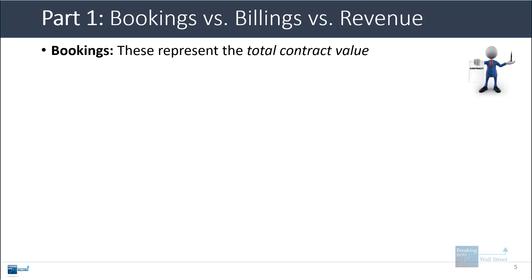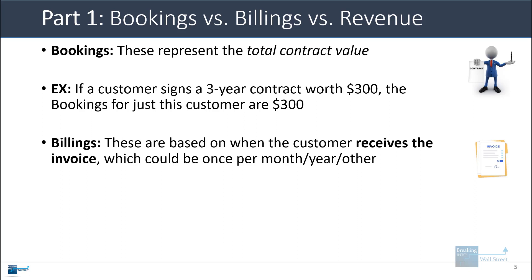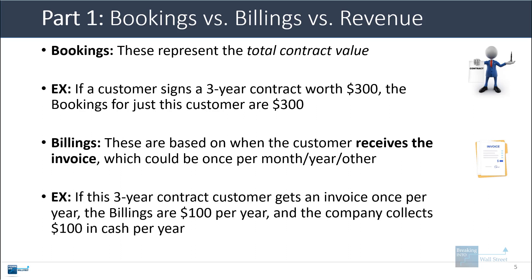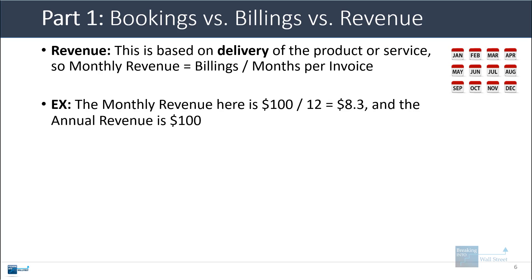Bookings for a software as a service company represent the total contract value. So if a customer signs a three-year contract worth $300, the bookings for just this customer are $300. Billings are based on invoices and linked to when the customer actually receives the invoice — once per month, once per year, or twice per year. If this three-year contract customer gets an invoice once per year, billings are $100 per year and the company collects $100 in cash per year. Revenue is based on delivery of the product or service, so monthly revenue equals billings divided by months per invoice — in this case $100 divided by 12, or $8.33.